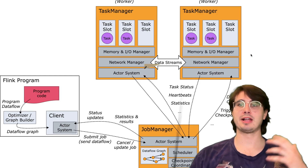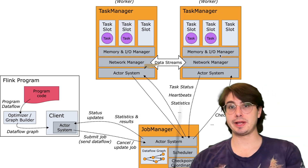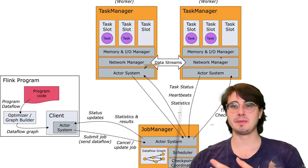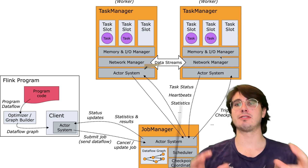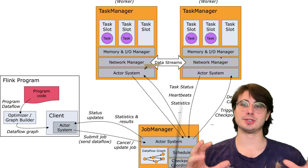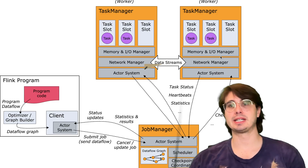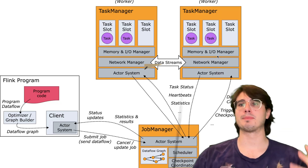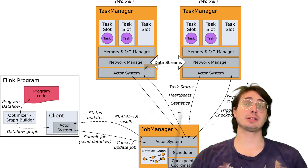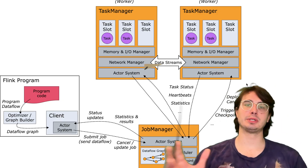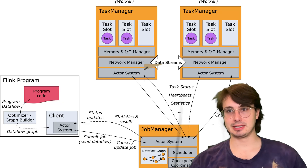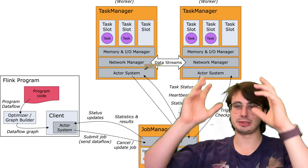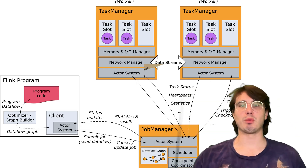Your default parallelism should reflect your typical job requirements, but individual operators will need to be tuned based on their computational complexity and data volume. Source and sink operators typically benefit from different parallelism levels than processing operators, because each of those operations requires much less compute power than a processing operation. Consider partitioning your input data when setting source parallelism, and ensure sink parallelism aligns with your downstream system's capacity to ingest data from many different threads.